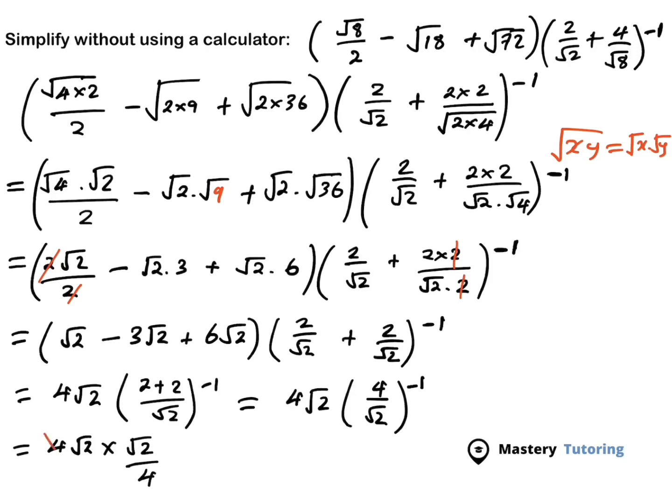Now the 4 and the 4 are going to cancel. And when you multiply square root of 2 by square root of 2, you're going to get 2. So this is the answer to the equation. I hope this is clear and you understand what's going on in this question. If you have any questions, please leave your comment. Thank you for watching. Goodbye.